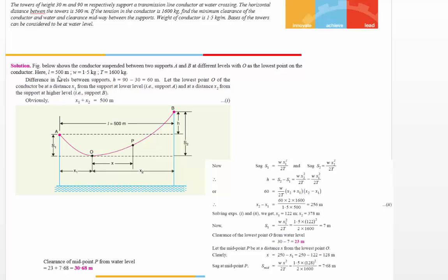The length is 500 meters, and the tension is 1600 kg. Now find the minimum clearance of the conductor and water, and the clearance midway between the supports. We need to find out the minimum clearance between the conductor and the water.